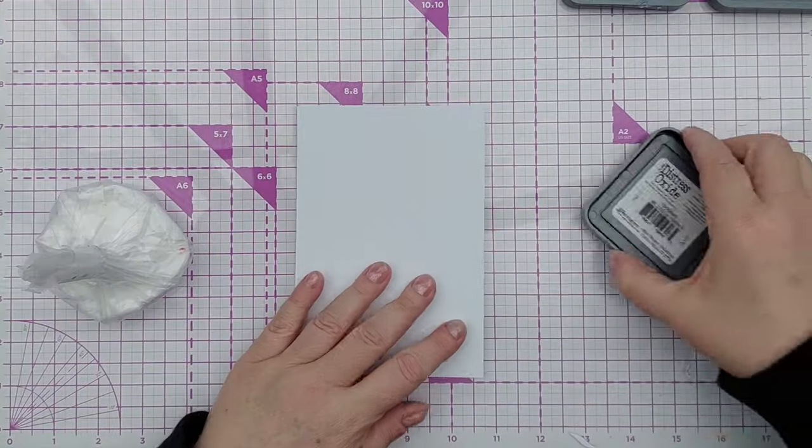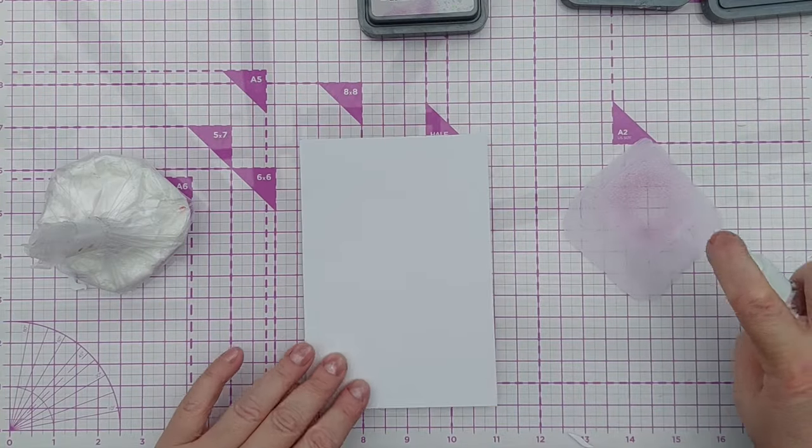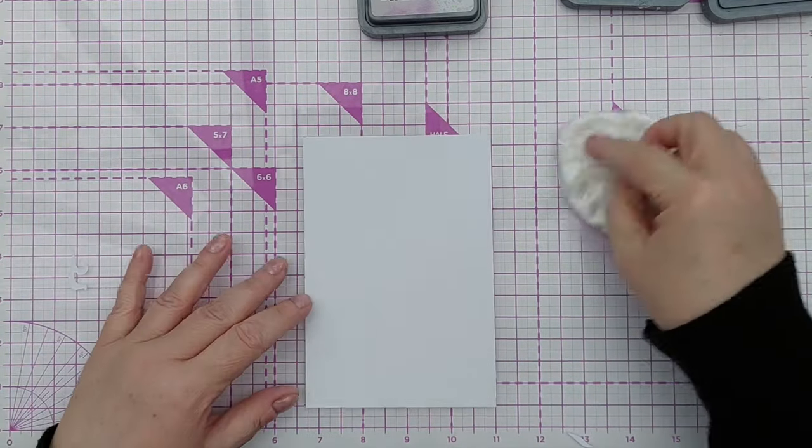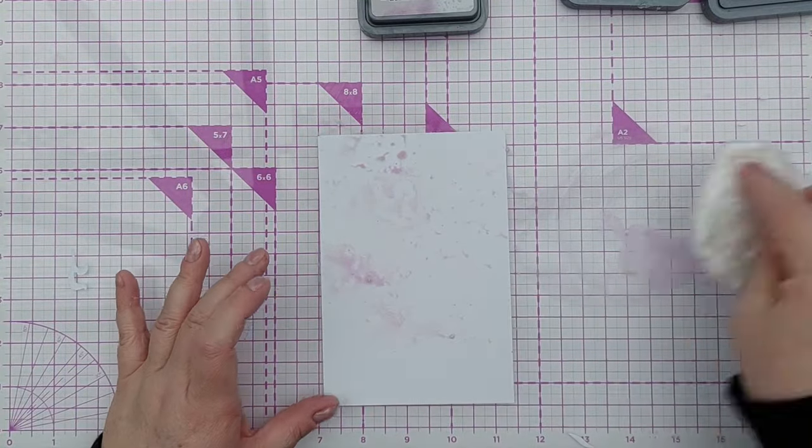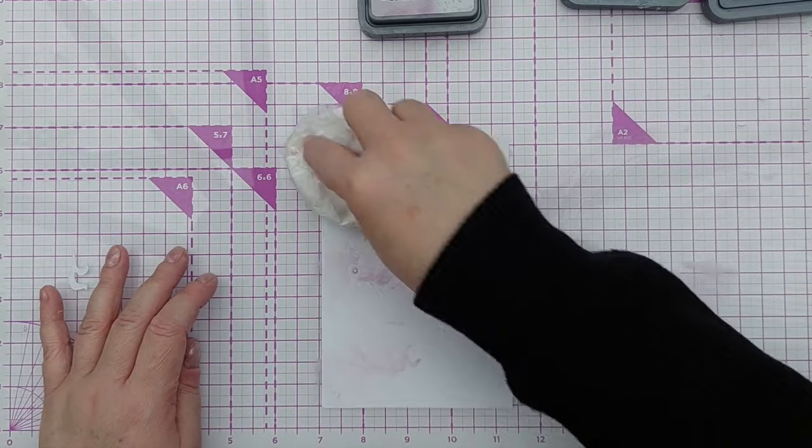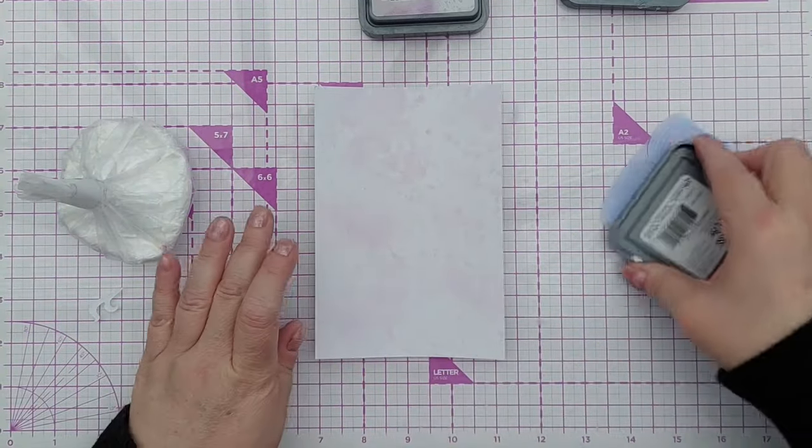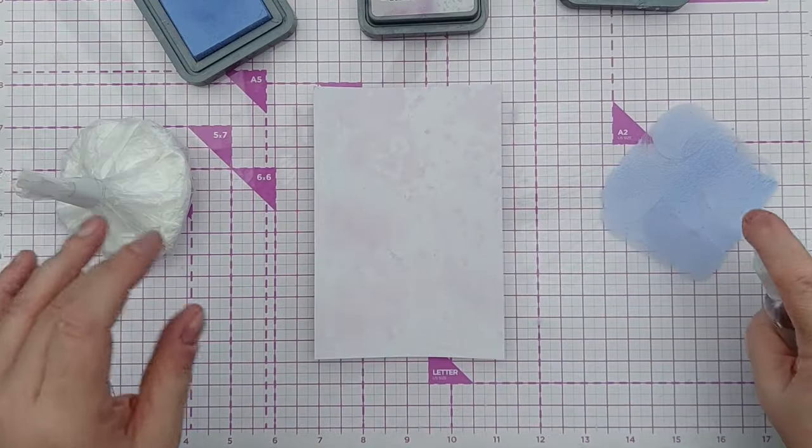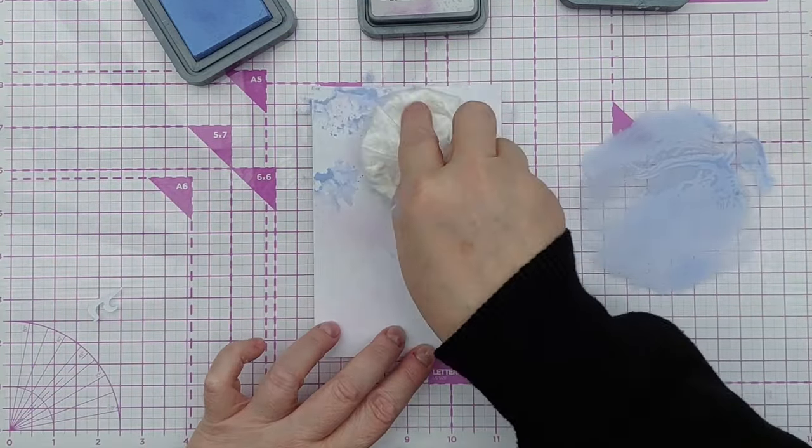To create my background for my aperture, so this is going to go behind the front panel, I smushed some ink on another piece of hammered white cardstock. The inks I'm using today are milled lavender, shaded lilac and salvaged patina distress oxides and I love this combination. I love the two purpley pinky colours with the pop of teal on top.